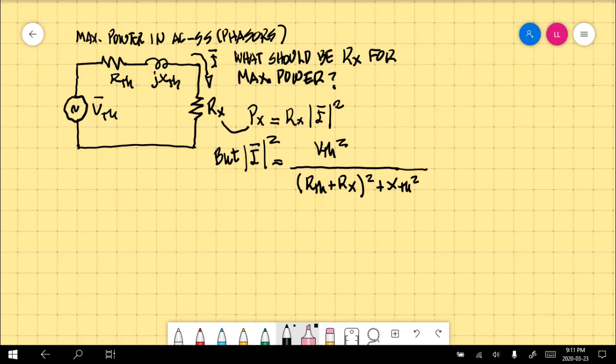Multiply that by Rx and we have Px, the total power in that external resistor, which is the power that we want to maximize. We can write Px as Rx that multiplies Vth in absolute value, the RMS value, divided by the square of the impedance in the total loop: (Rth plus Rx) squared plus Xth squared. That is the power we want to maximize.